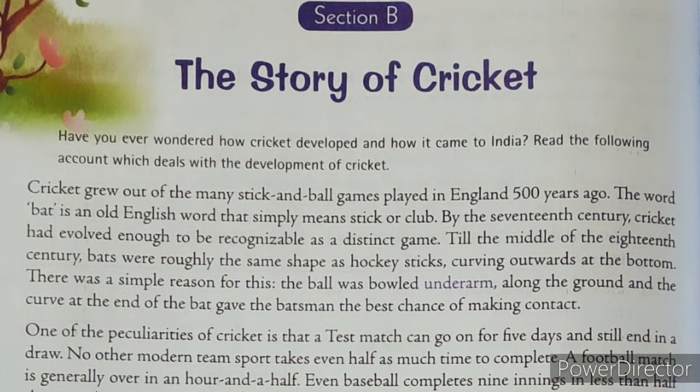Till the middle of the 18th century, bats were roughly the same shape as hockey sticks, curving outwards at the bottom. There was a simple reason for this: the ball was bowled underarm along the ground, and the curve at the end of the bat gave the batsman the best chance of making contact. Then we find some peculiarities, some oddities in the cricket game.